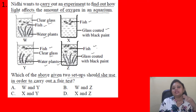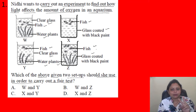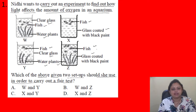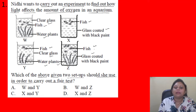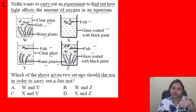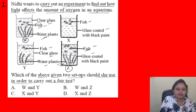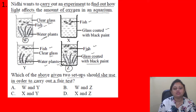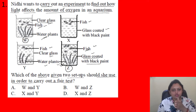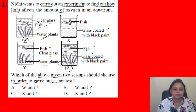To find out how light affects oxygen in an aquarium, we need two setups — one that receives light and one that does not. The only difference should be the clear glass versus glass coated with black paint. The other contents inside the aquarium should be the same. In W, fish and water plant are present; in Z also fish and water plant are present. W has clear glass and Z has glass coated with black paint, so the correct answer is option B: W and Z, making it a fair test.